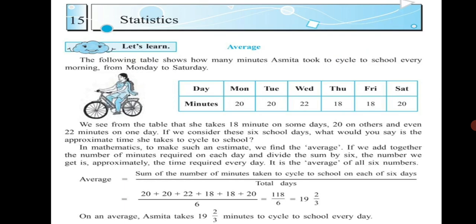In mathematics, to make such an estimate we find the average. If we add together the number of minutes required on each day and divide the sum by 6, the number we get is approximately the time required every day. It is the average of all 6 numbers.